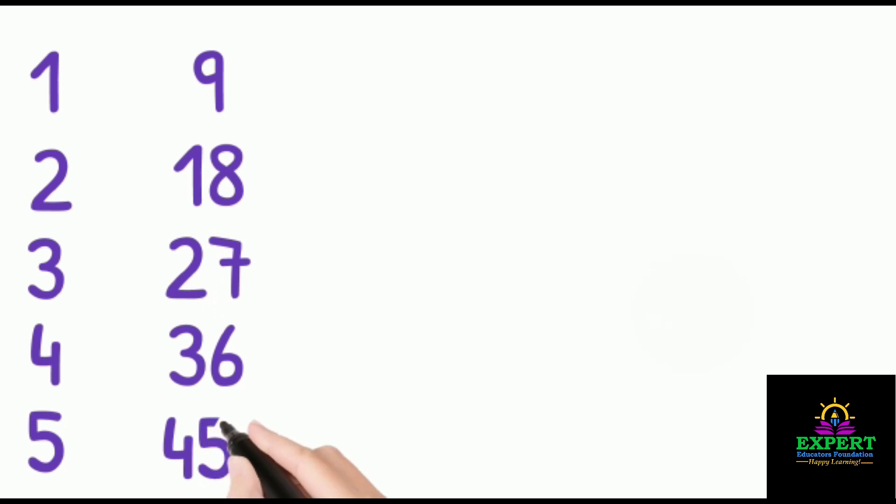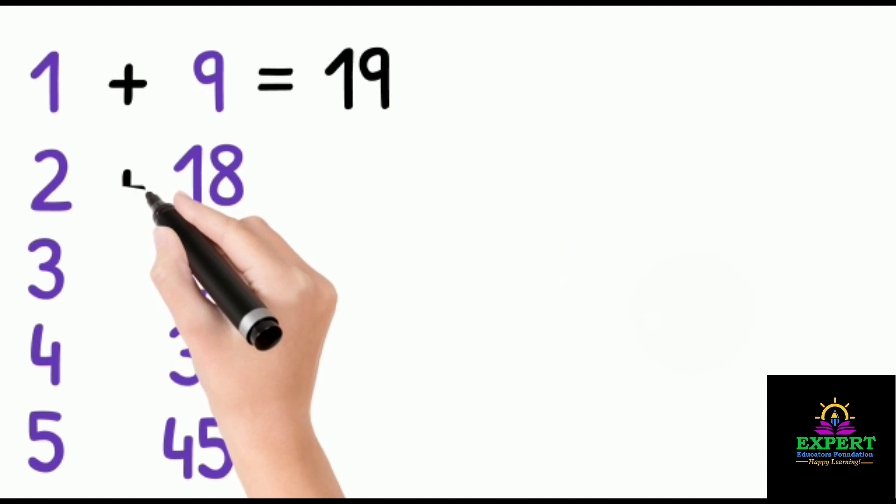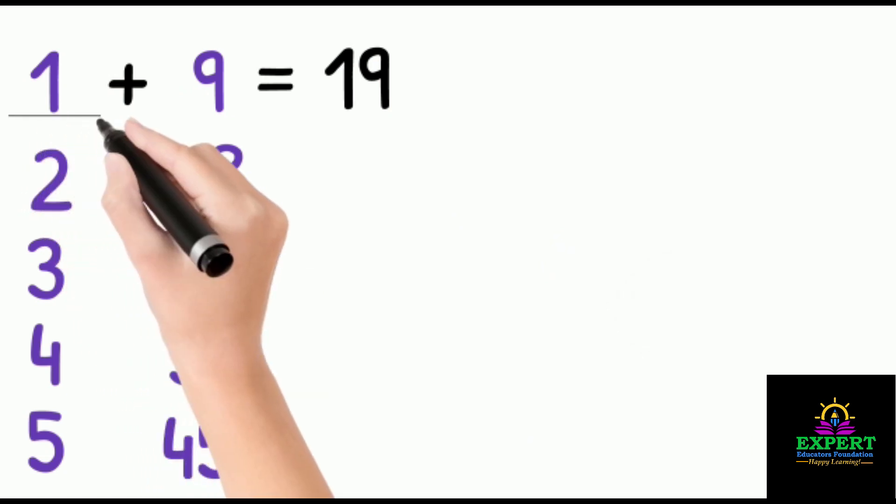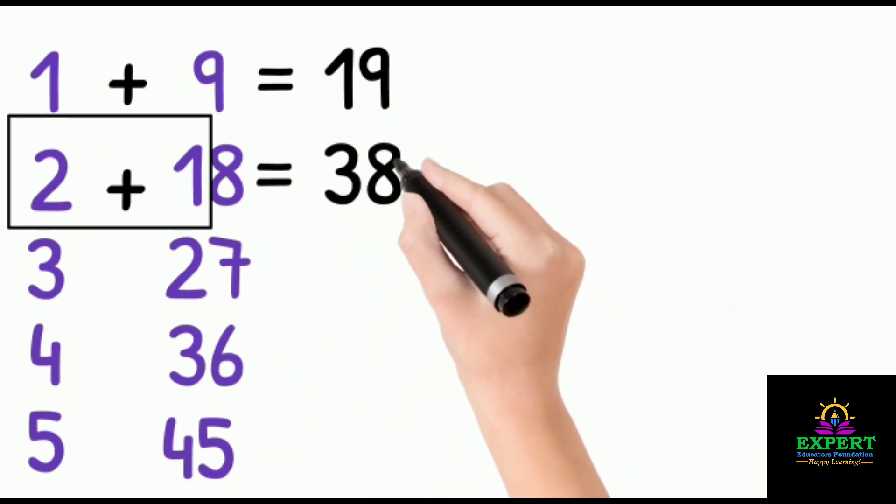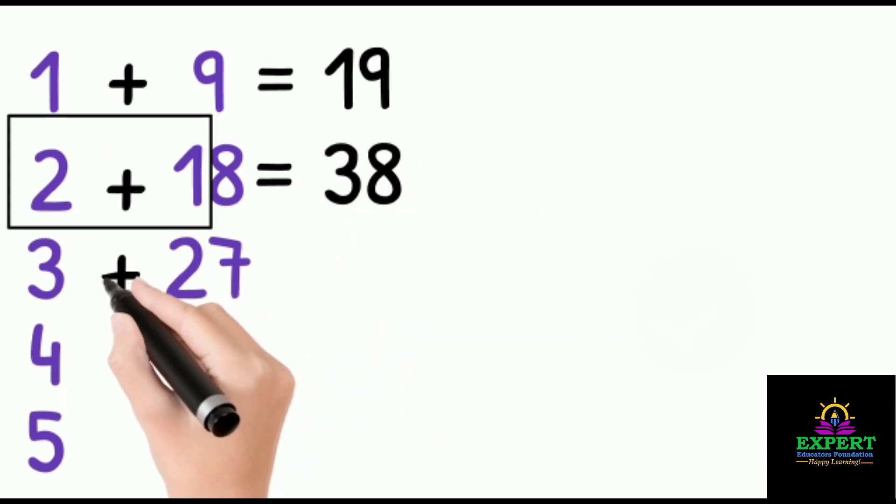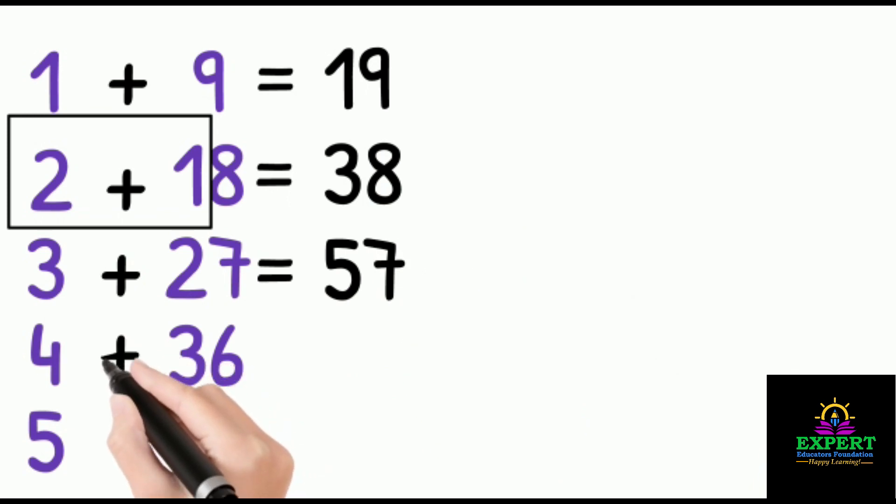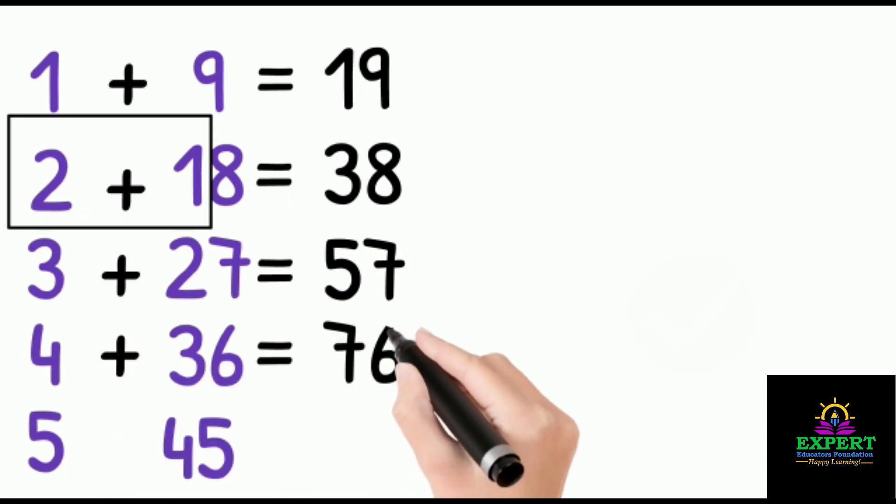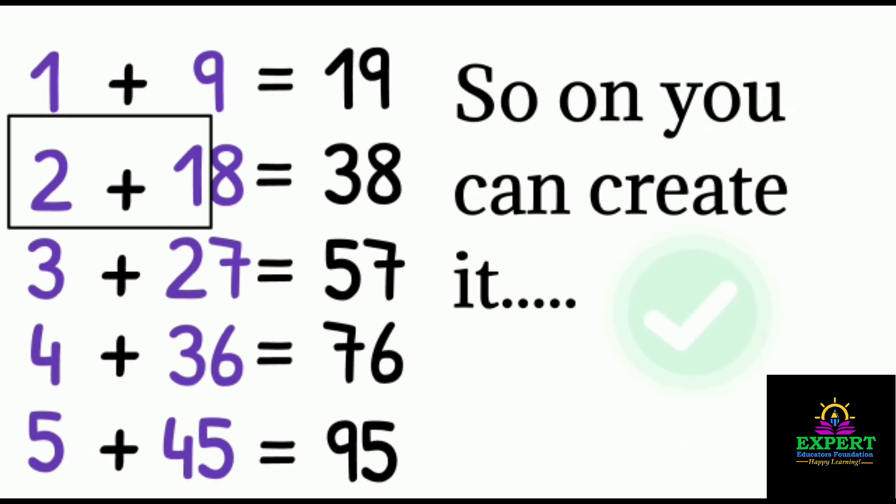Now we will just add the numbers. Here 1 plus 9 - we will not write 10, we will just join it: 19. Here we will not add 18 plus 2, we will add 2 plus 1 which is equal to 3, and 8 as it is. The next one is 3 plus 2 which is equal to 5, 7 as it is. 4 plus 3 is equal to 7, 6 as it is. 5 plus 4 is equal to 9, 5 as it is. And so on you can create it.